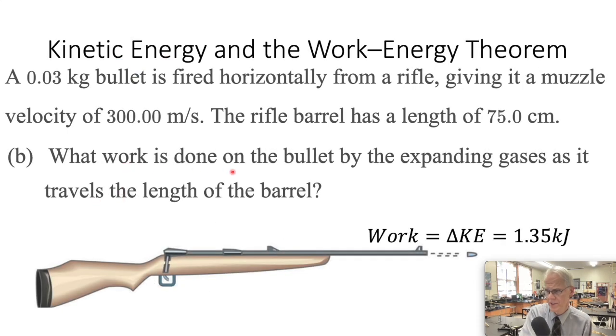Now what is the work done on the bullet by the expanding gas as it travels the length of the barrel? Now in this case, the work done was force times distance or displacement, but we don't need that because we know the change in kinetic energy. It went from zero kinetic energy to 1.35 kilojoules of kinetic energy. So that is the work done. Using energy a lot of times will make problem solving a lot easier.